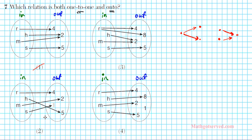Option 2: we have 1-to-1, 1-to-1, 1-to-1, 1-to-1 — this looks good. Remember we're just looking at 1-to-1-ness, not onto yet. Option 3: we have a violation because R goes to two distinct outputs — that's 1-to-2 — and H and M both go to 2, which is 2-to-1. Two violations, so this is not 1-to-1. The last one: R, H, M, and S each go to exactly one output. So options 2 and 4 are both 1-to-1.